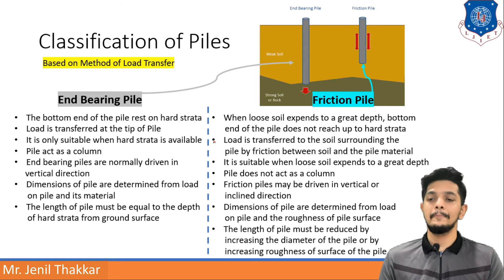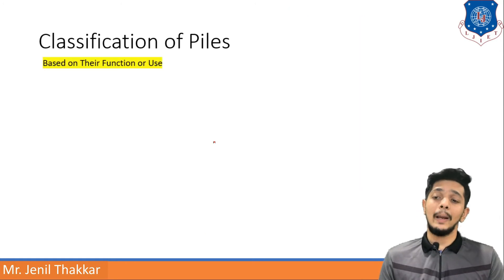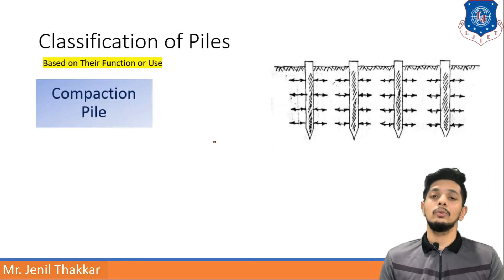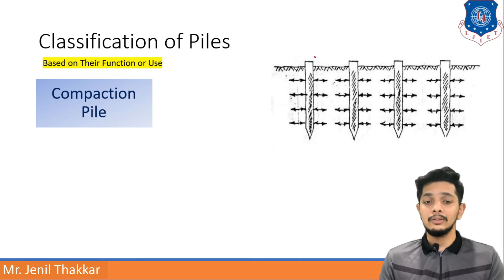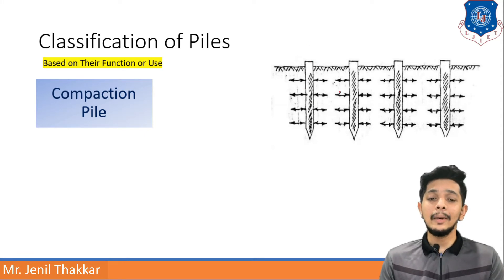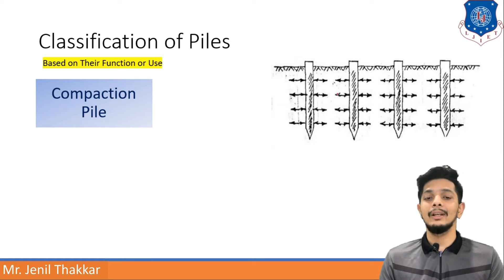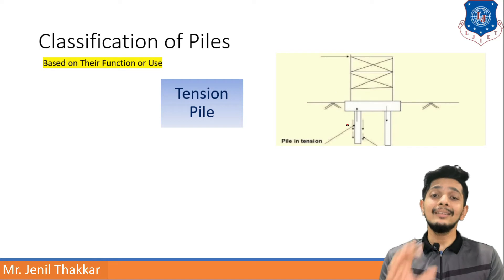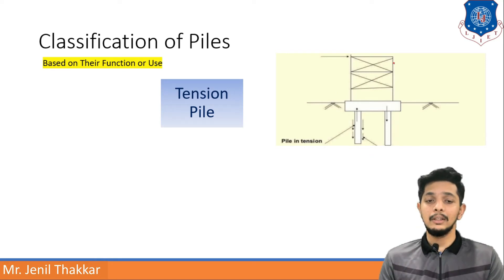Moving further — classification of piles based on their function or use. First is the compaction pile: when it is driven or inserted in soil, the nearby soil gets compacted, which is why it is known as a compaction pile. Next is the tension pile, which works in tension only.